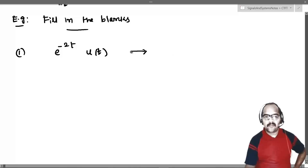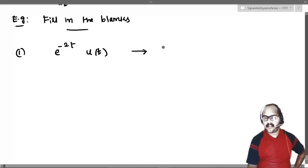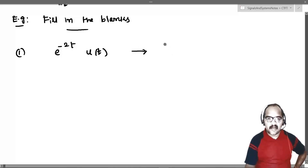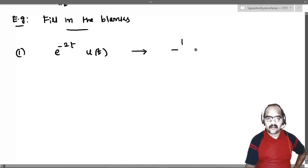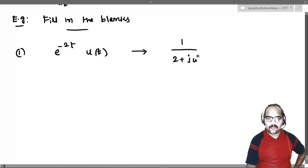That's easy because a is greater than 0. Definitely this signal will have a Fourier transform. You will get 1 by 2 plus j omega as the Fourier transform.